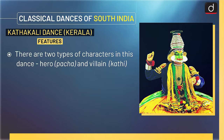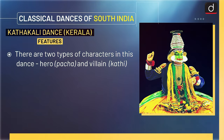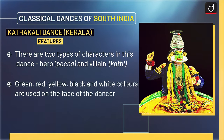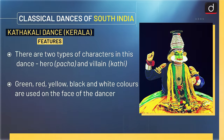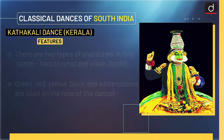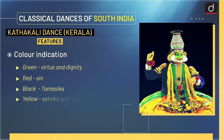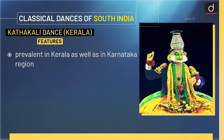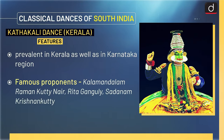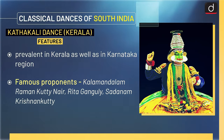There are two types of characters in Kathakali. Color indication in Kathakali: green is for virtue and dignity, red is for sin, black is for Tamasic, and yellow is for Sattvic and Rajasic. Kathakali is prevalent in Kerala as well as in the Karnataka region. Famous proponents of Kathakali are Kalamandalam, Raman Putti Nayar, Rita Ganguly and Sadhanam Krishna Kutti.